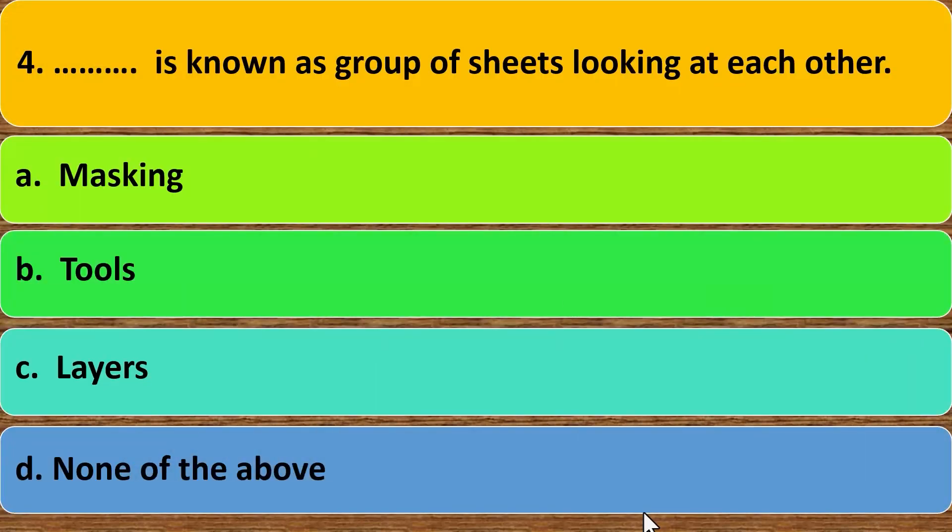Fourth, dash is known as group of sheets looking at each other. A. Masking. B. Tools. C. Layer. D. None of the above. Correct answer is C. Layer.